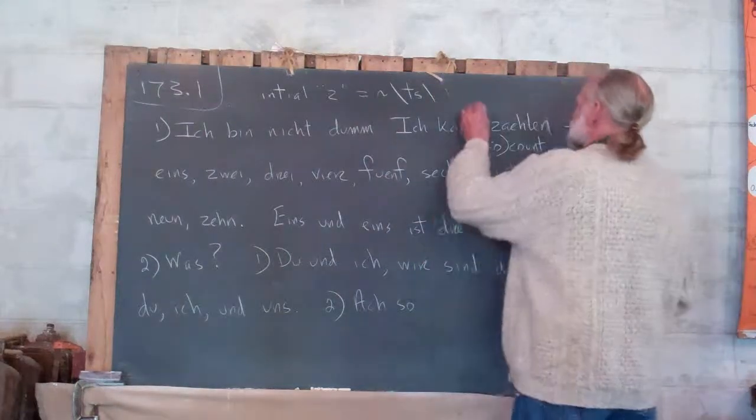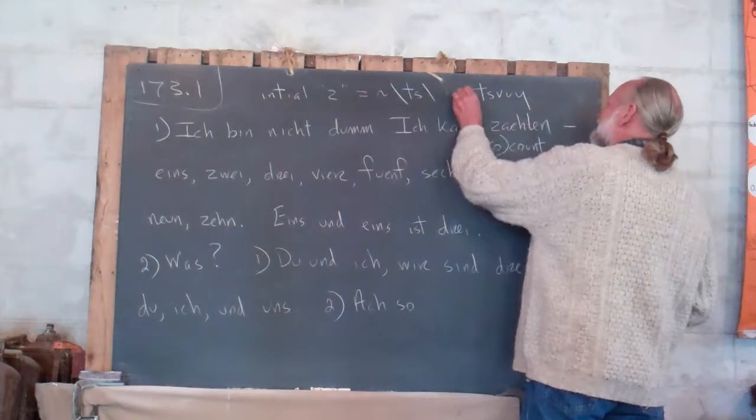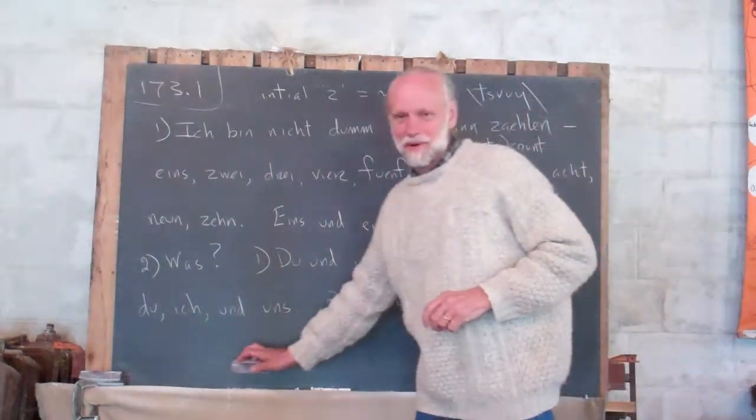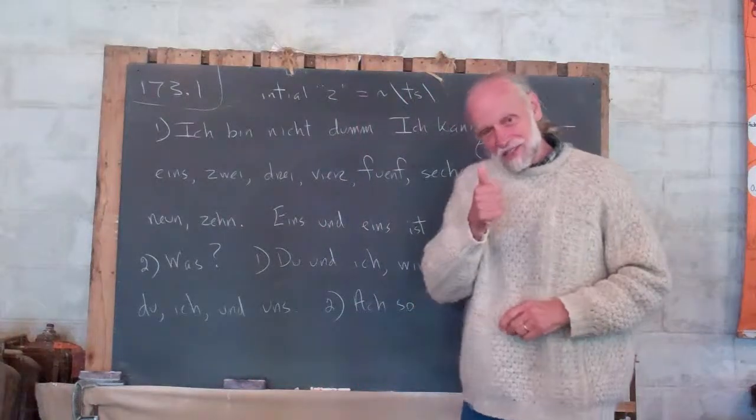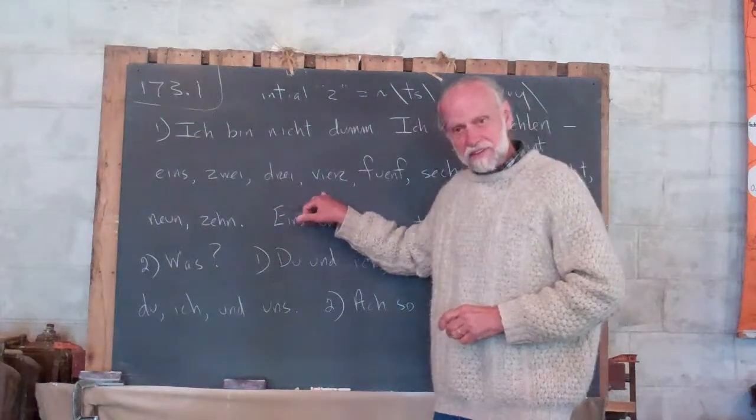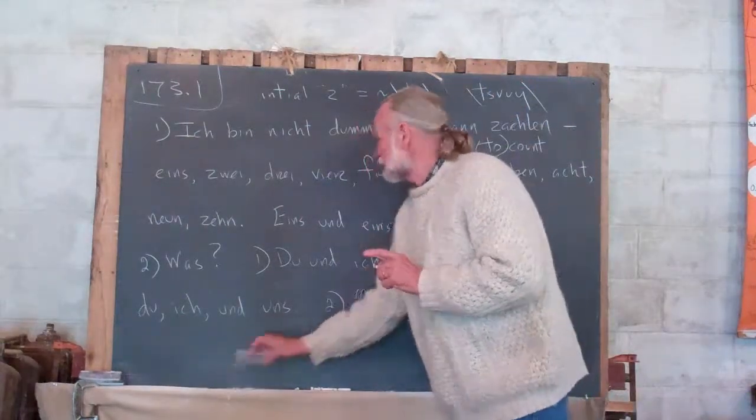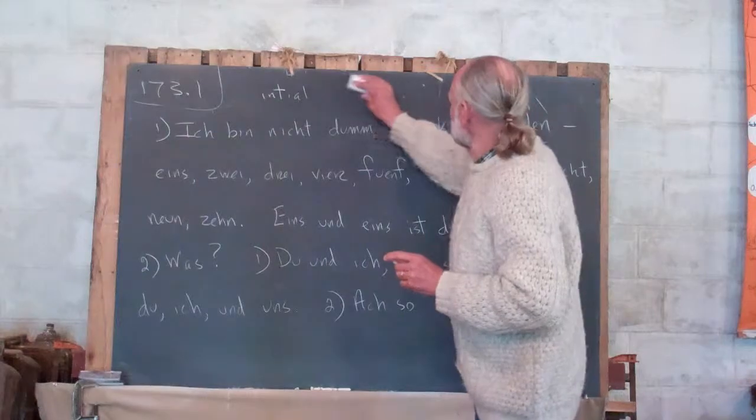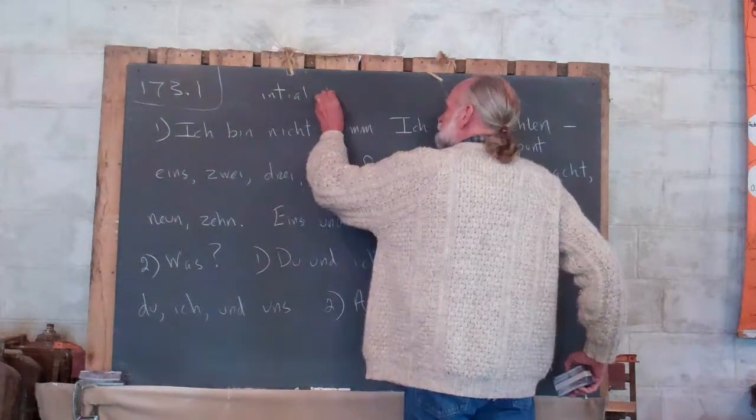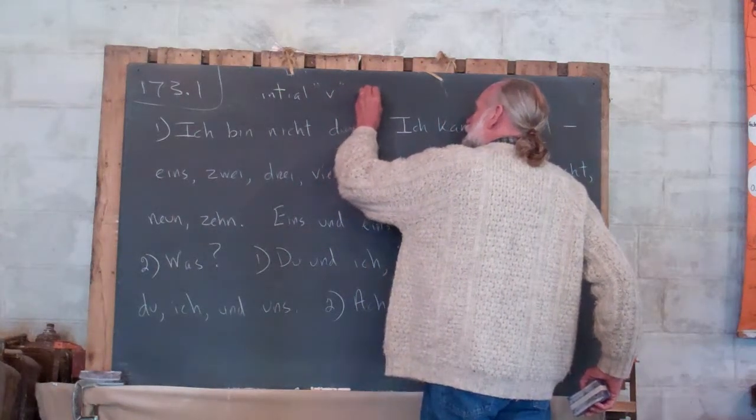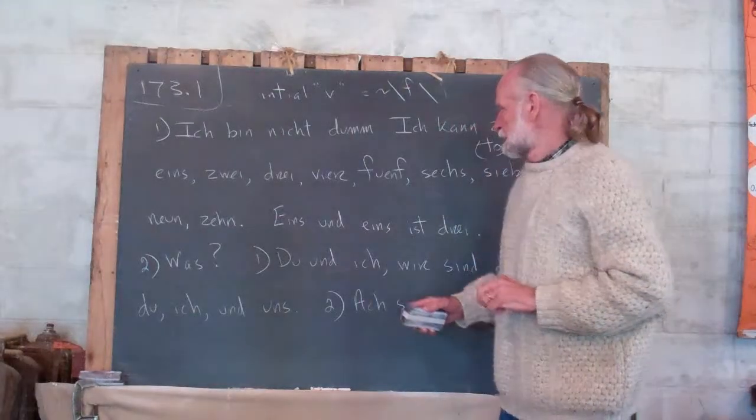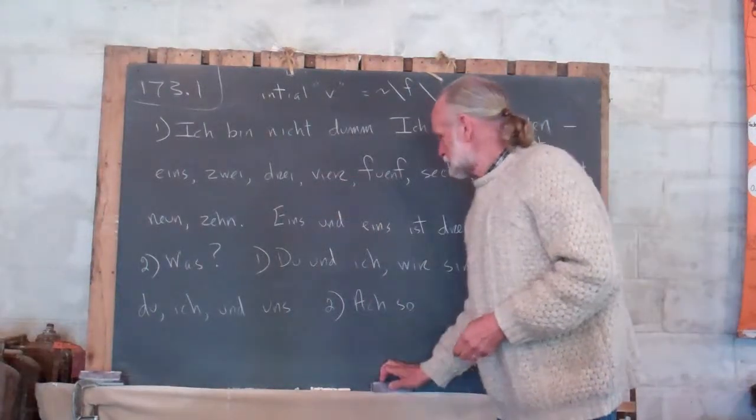Eins, zwei, drei, vier. Now I didn't tell you that. That an initial V in German has more or less the sound of our English F. Fier.